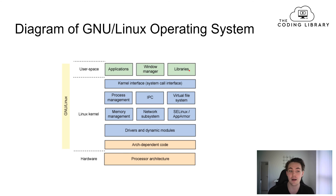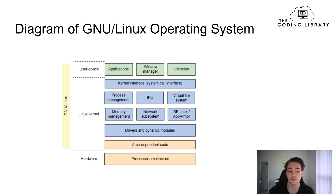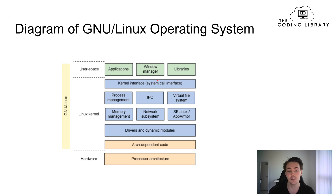To interact between the user space and the Linux kernel, we have the kernel interface, which is the system call space. When we're making calls from the user space and want to do something on the hardware, we need to use these system calls from user space to actually do operations in the Linux kernel. This system call space is the interface between user space and the Linux kernel.